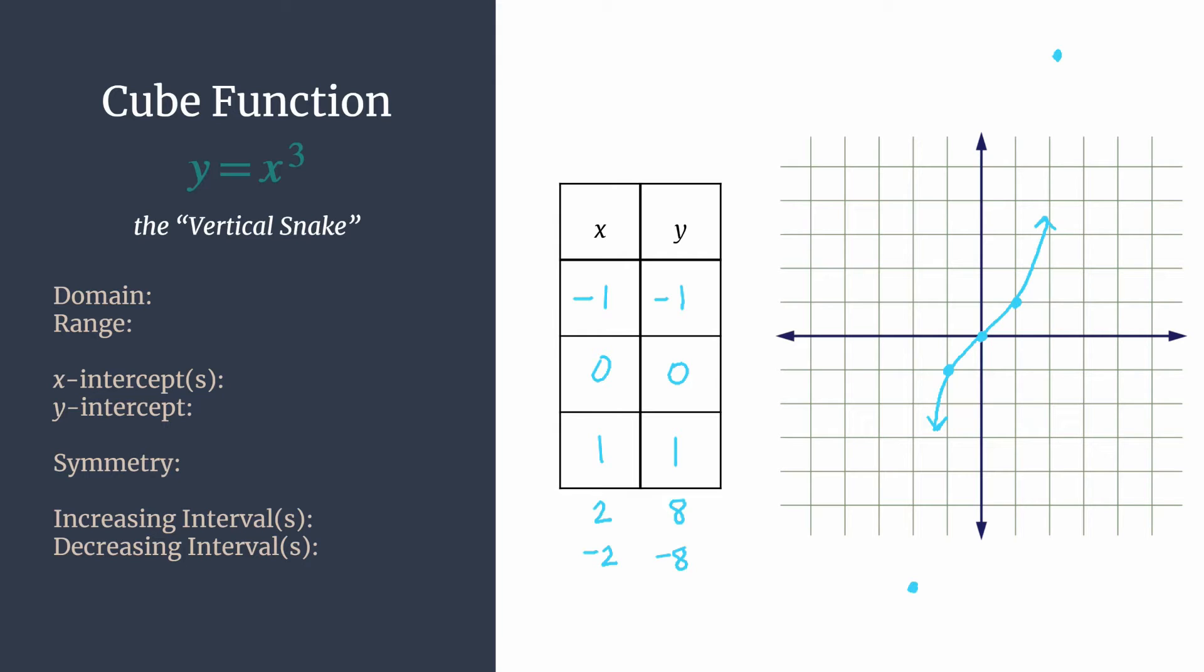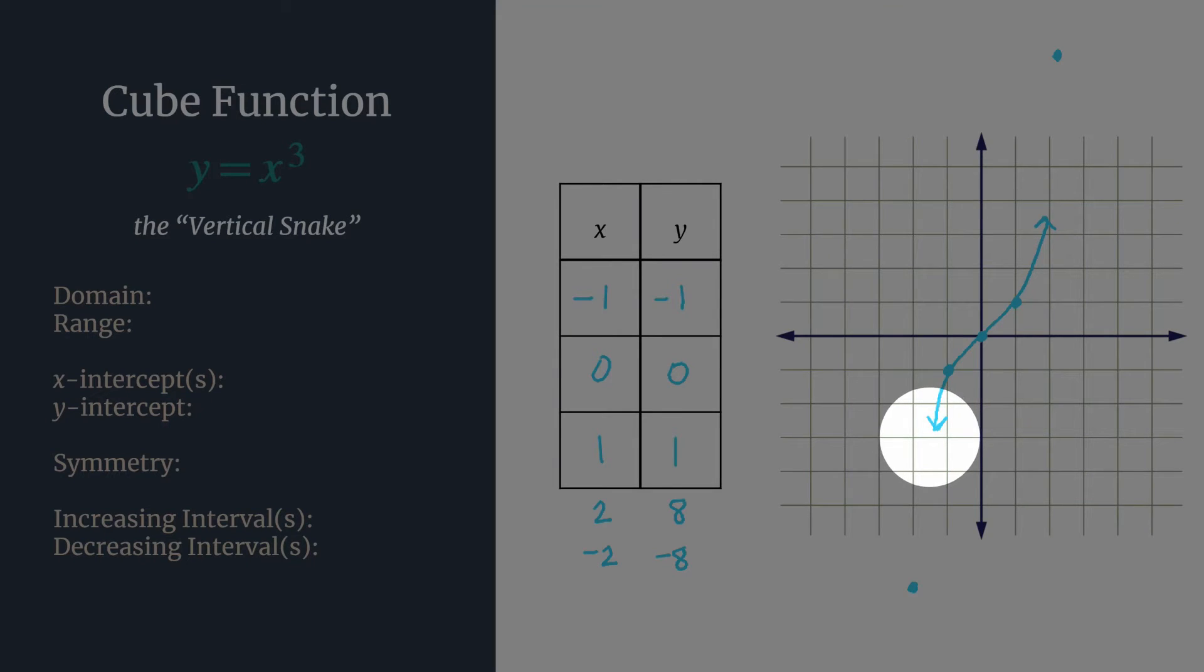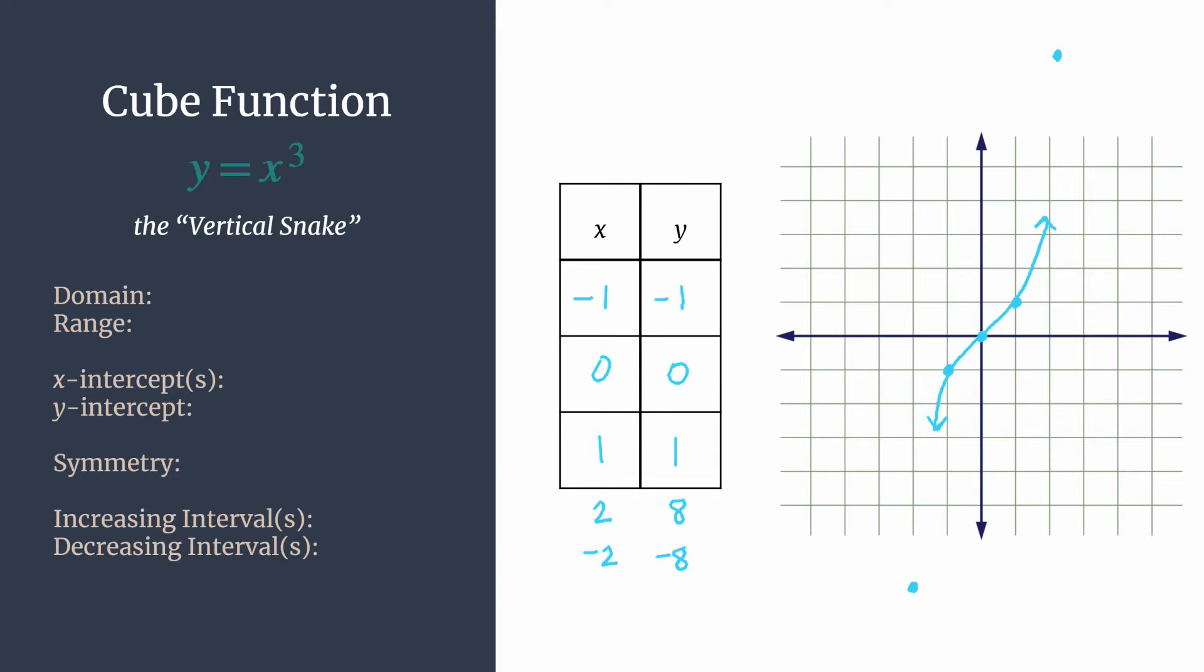Now let's look at some of the characteristics. So domain is the list of all of our x values. We're looking from left to right. So from the leftmost point, you see that our x's go on negative infinity. They get more and more negative. If our graph continued, all the x's keep going forever positive. So we have all real numbers here. So our domain will write as negative infinity to infinity.